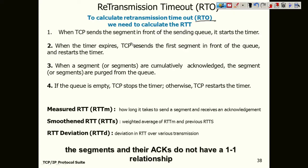TCP is a reliable protocol and whenever any transmission is made, all transmissions will be acknowledged. TCP sends a segment at the front of the sending queue and starts a timer — we call it a round trip timer. Whenever a segment is delivered, the timer starts with an expiry duration. If the acknowledgement is not received before the timer expires, whatever is at the front of the queue will be retransmitted.